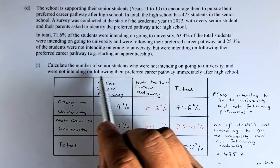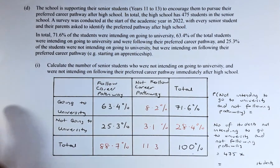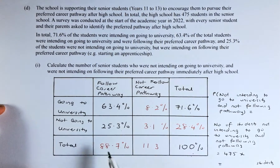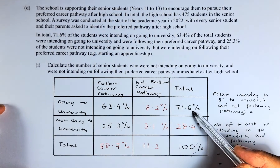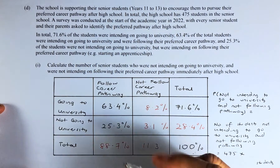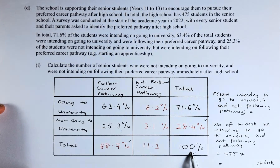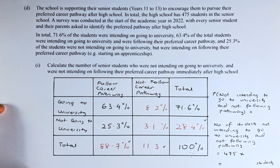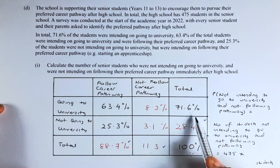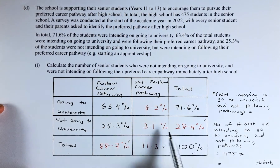We are going to calculate the number of senior students who were not intending to go to university and were not intending to follow their pathway immediately after high school. The values in black are given, so we can calculate the ones in red. 100 minus 71.6 is 28.4. 63.4 plus 25.3 is 88.7. So 100 minus 88.7 is 11.3. And 71.6 minus 63.4 gives us 8.2, and 28.4 minus 25.3 gives us 3.1.